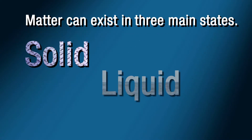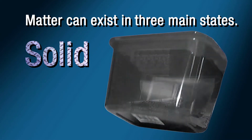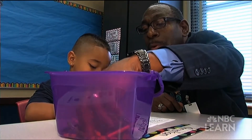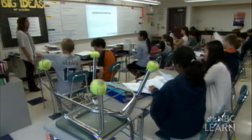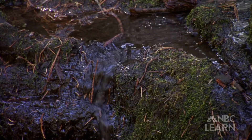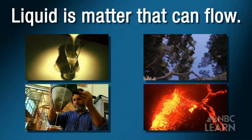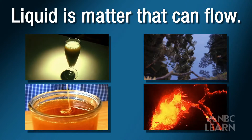Matter can exist in three main states: solid, liquid, and gas. A solid is a substance that has a definite shape and volume. Solid matter retains its shape, like the chair you're sitting on right now. A liquid is a substance that has a definite volume but no definite shape — it can flow while keeping a constant volume, like milk or honey.